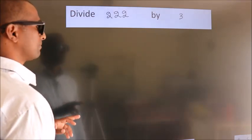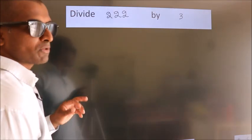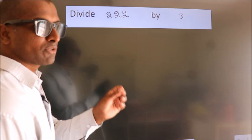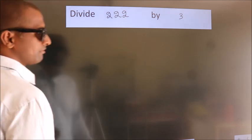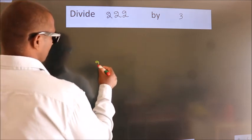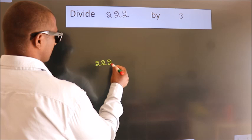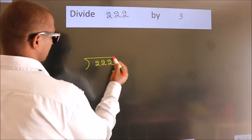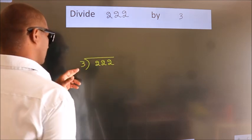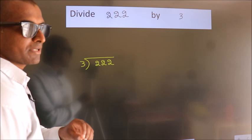Divide 222 by 3. To do this division, we should frame it in this way. 222 here, 3 here. This is your step 1.